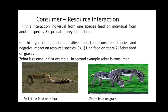Consumer-resource interaction: individuals from one species feed on individuals from another species — example: predator-prey interaction. This results in a positive impact on the consumer species and a negative impact on the resource species. Example: lion feeds on zebra — zebra is negatively affected and lion benefits. Zebra feeds on grass, so grass is the resource and zebra is the consumer, resulting in a loss of grass.